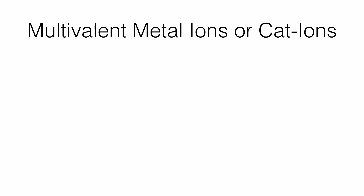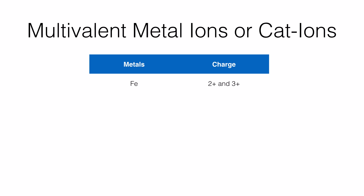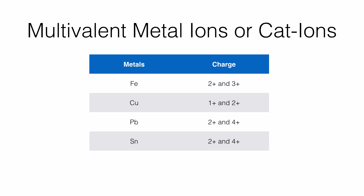Here are some examples of multivalent ions. These multivalent ions are positive ions, therefore they are also called cations. Iron has 2+ and 3+ valencies. Copper forms 1+ and 2+ valencies. Lead forms 2+ and 4+. Tin forms 2+ and 4+. Mercury forms 1+ and 2+.